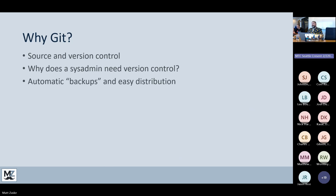I like to think about it as automatic backups and distribution, because if you're using a management tool like GitHub or GitLab — there are a number of different hosting providers, and you can self-host your own. GitHub Enterprise is another one. If you have that central repository, you can get access to your stuff from wherever you are, because I've been on the wrong machine where the script I just changed doesn't live anymore.